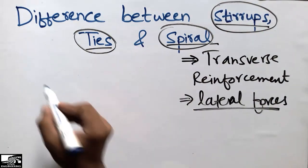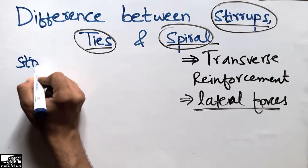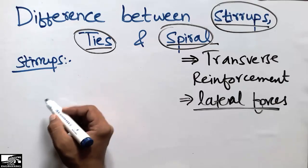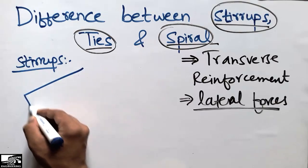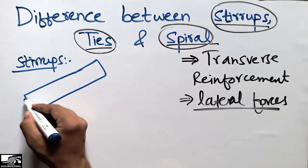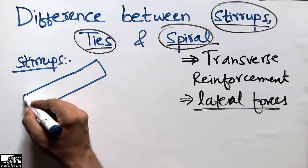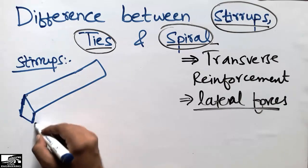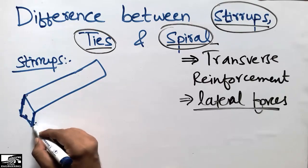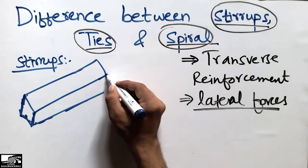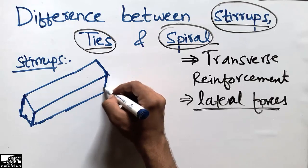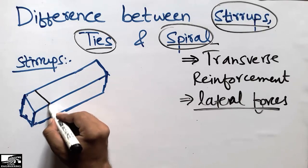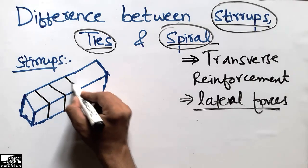Now to discuss the differences: first, the stirrups. The stirrup is the transverse reinforcement used in beams. If we consider this is a beam, we place lateral reinforcement inside it, and this reinforcement is called stirrups.